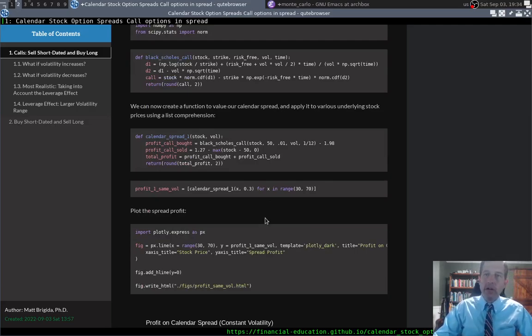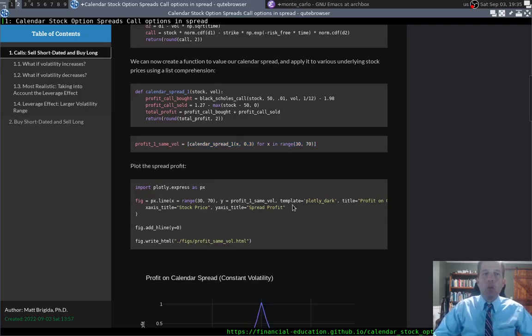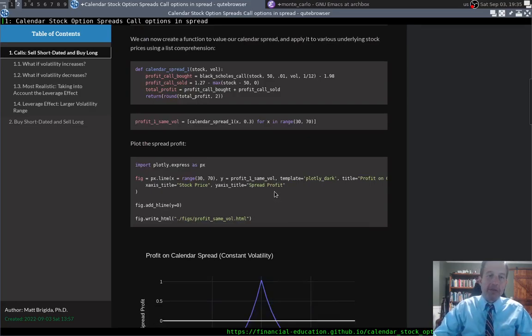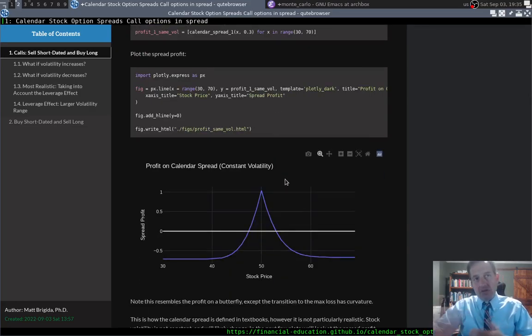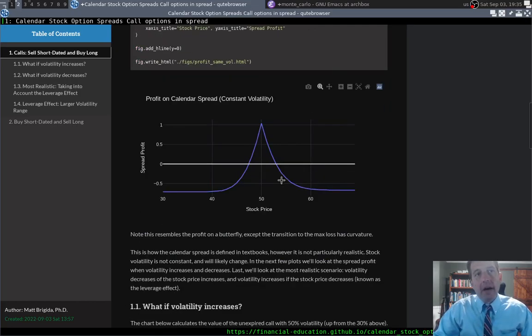What we're going to do here throughout, just in case you're also learning a little bit of Python, we're going to use these list comprehensions to basically, instead of for loops, calculate the calendar spread for various underlying stock prices. So jumping into what the P&L will look like at expiration of the first option, and then again, we're selling the option that we bought.